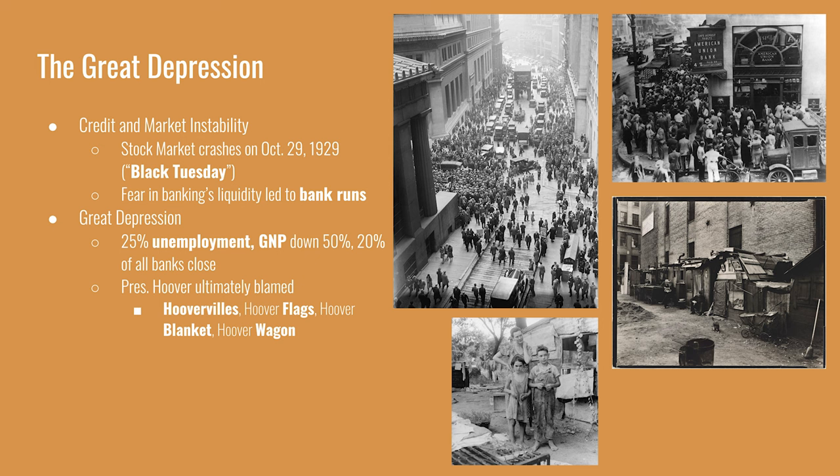The U.S. reached 25% unemployment at the worst point of the Great Depression. Gross National Product fell by 50%, and about 20% of all U.S. banks closed. President Hoover, elected in 1928 and barely seven months into the job when the crash hit, was ultimately blamed for the economic suffering. Although he had shown competence managing the Food Administration during World War I and as Secretary of Commerce from 1921 to 1928, nothing could have prepared him. His laissez-faire mentality meant he didn't do anything meaningful to address the Depression until it was too late.